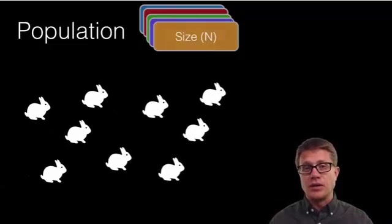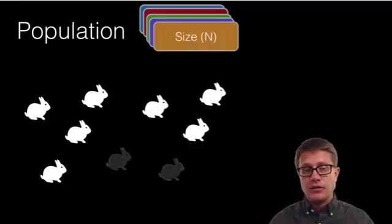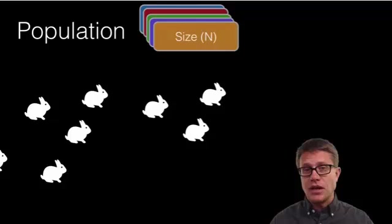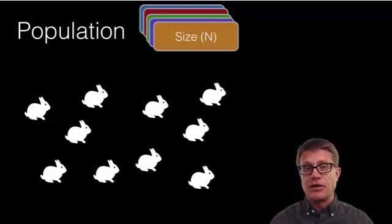If we have these rabbits—9 rabbits—their N value at this point would be 9. If we lose 2 of them, our N value is 7. If we gain 3, now our N value is going to be 10. It's the set number we have.